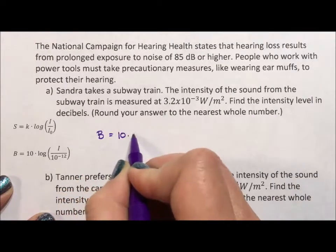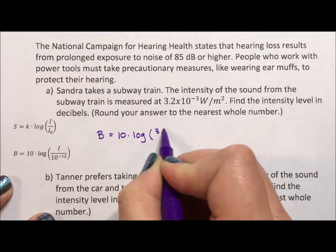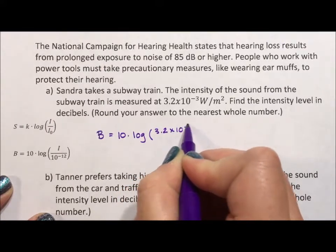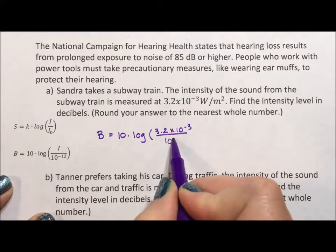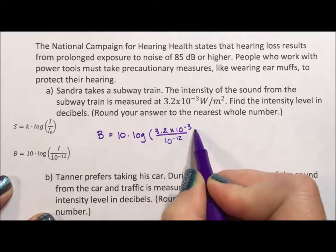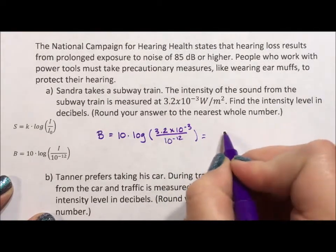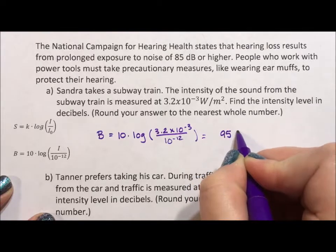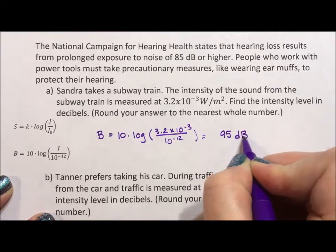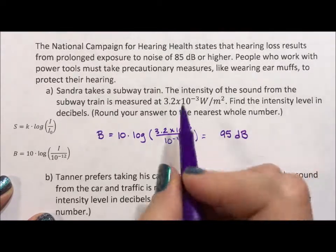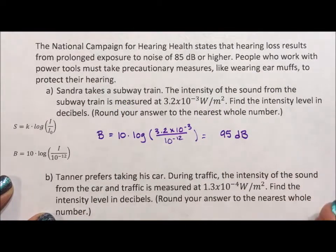So 10 times log of 3.2 times 10 to the negative 3, divided by 10 to the negative 12. And if we throw this into our calculator, we get 95 decibels. People don't always think about how loud the ambient noise around them is in a place like a subway or even in a car.